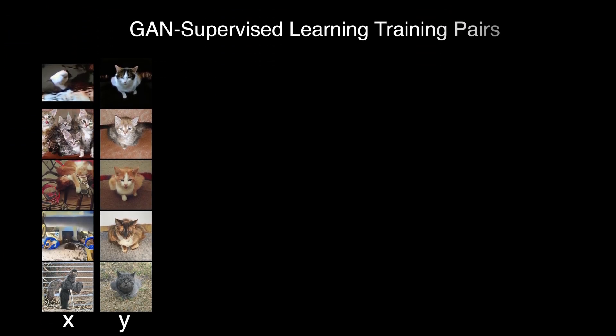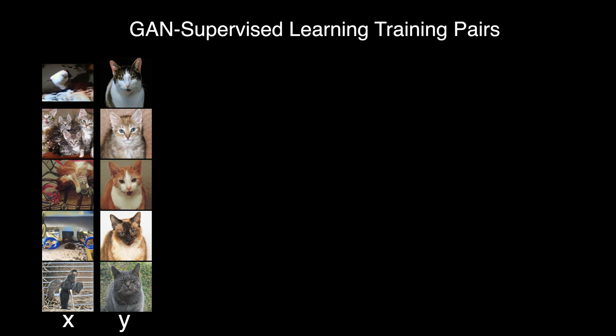Let's take a look at how our GAN-supervised training pairs evolve over the course of training. At the start of training, we initialize the target vector with the truncation trick, and as training proceeds, the target vector learns a mode in the dataset that makes the spatial transformer's job as easy as possible. You can also see that the training data generated by the GAN is sometimes incoherent — for example, some input images do not really feature a coherent cat — and our method just works well even with this imperfect training data.